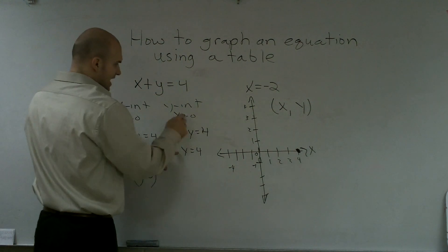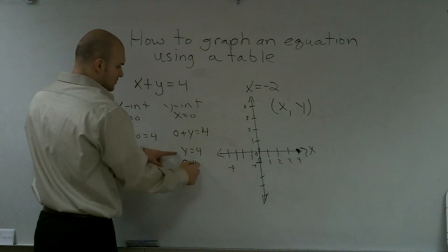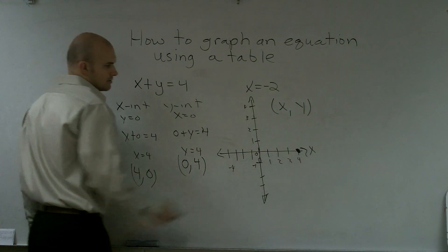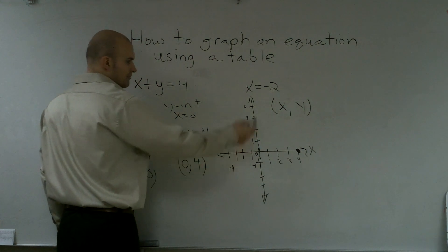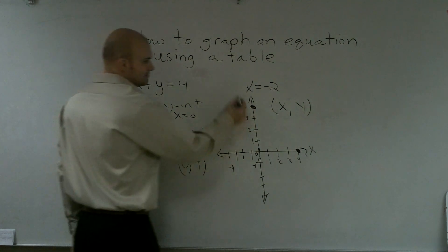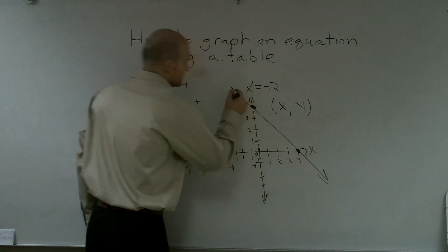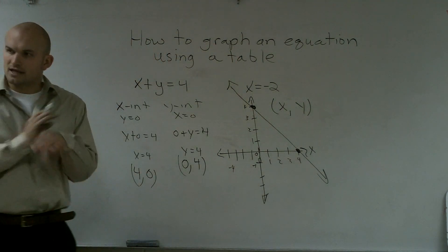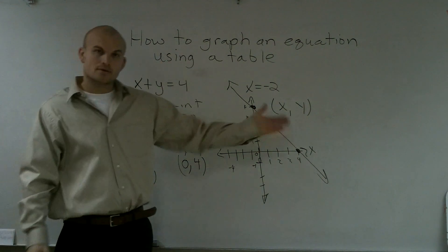Then for this one, x equals 0, y equals 4. 0 left or right, up 4. Now, to go and graph them, connect my two points, put the arrows at the end to know that they go to infinity, and there's my graph.